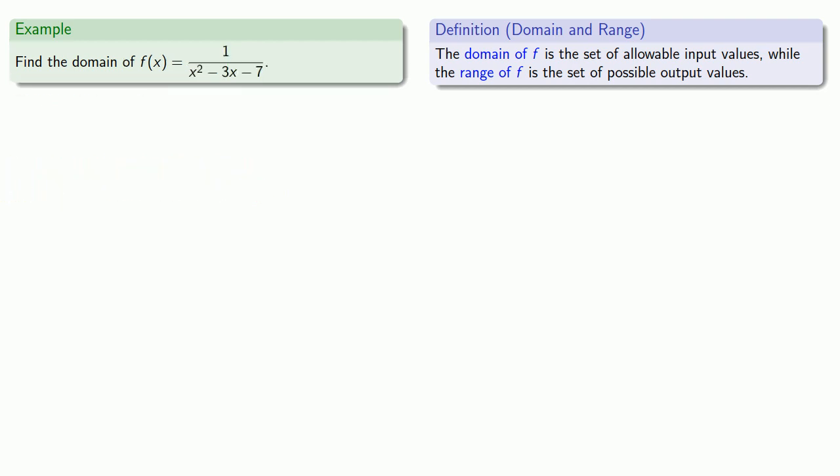For whatever reason, human beings seem to find it easier to work with what we can't do. We can't have a pack of cookies before dinner. So in something like this, if we want to find the domain, we might start out by asking ourselves what can't we use?